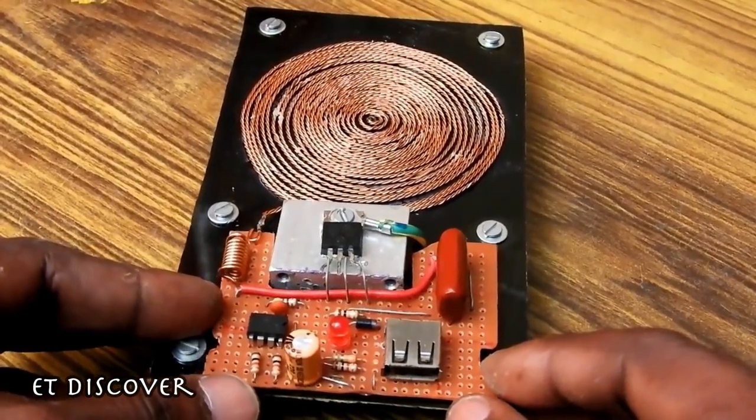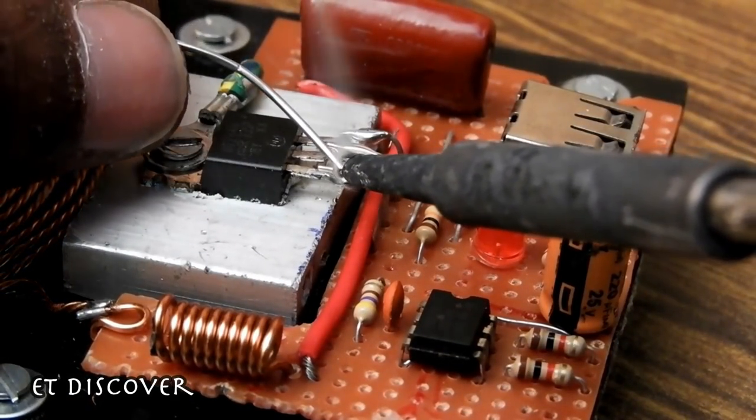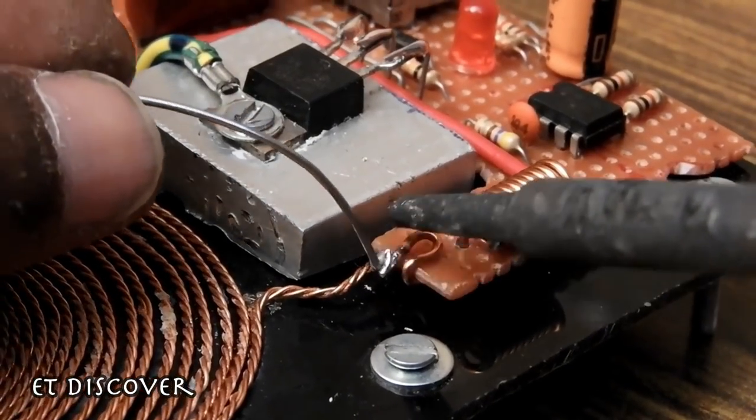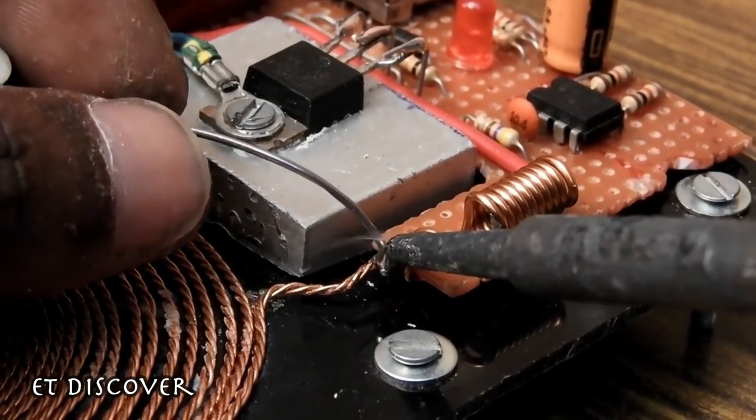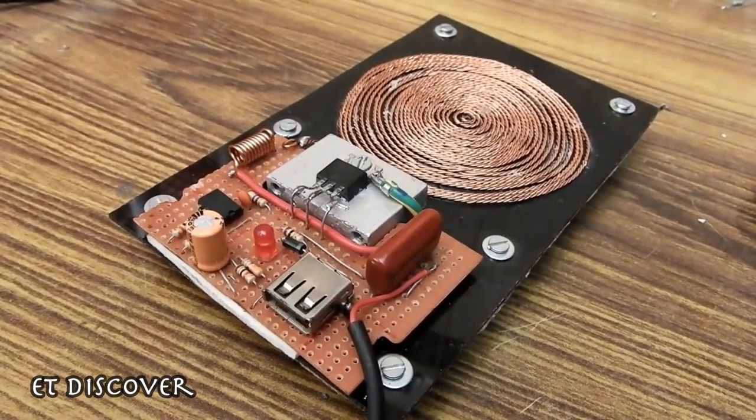Now I put the oscillator board on the charging pad and soldered all the gate, source, and drain pins carefully. And the second pin of the copper wire with the oscillator board's positive pin. So our wireless transmitter pad is almost ready.